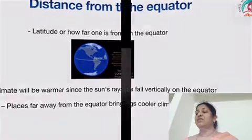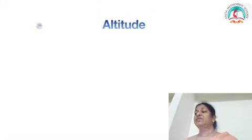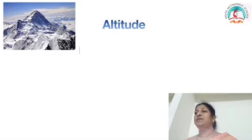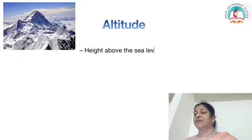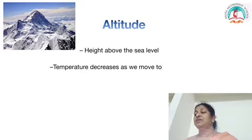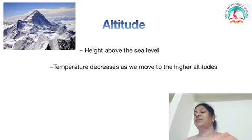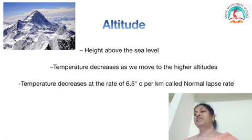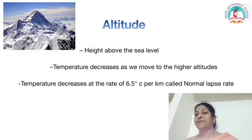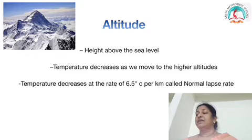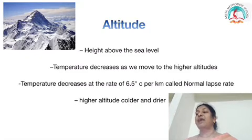The next factor is altitude, which refers to the height above sea level. As we move from the surface of the earth to higher altitudes, the temperature decreases. The temperature decreases at the rate of 6.5 degrees Celsius per kilometer, and this is called the normal lapse rate. So places at higher altitudes have lower temperature — it is colder and drier.